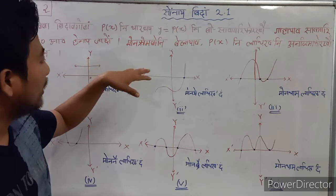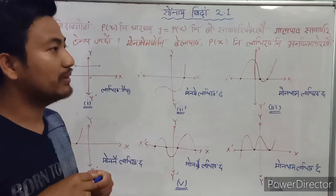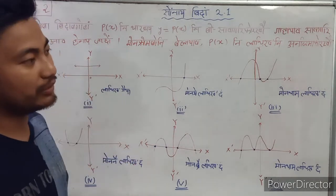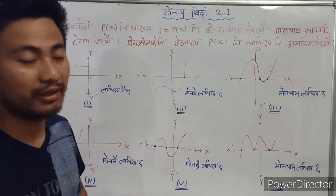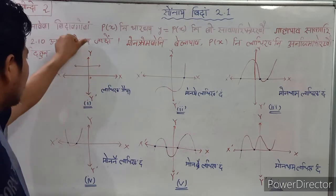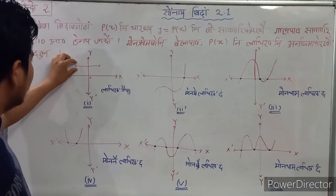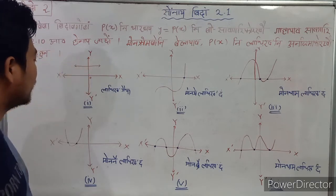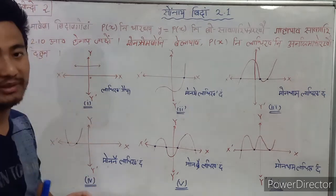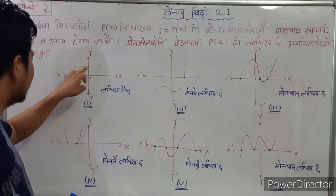Now we can see who — over the graph when x becomes — there is no graph that is x to x.